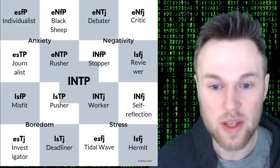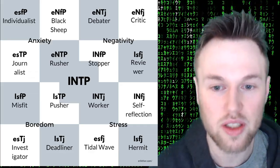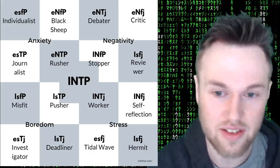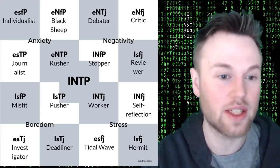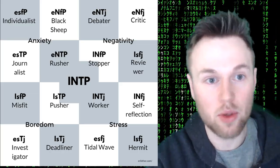INTPs most commonly move towards one of their sibling types — types that share similar preferences but differ slightly cognitively or on dichotomies. These are ENTPs, INFPs, INTJs, and ISTPs. INTPs can be more INTJ-like when in work mode, more ISTP-like when pushing to finish something or meet a deadline and take action, and more ENTP-like when feeling rushed and needing to think on their feet quickly.